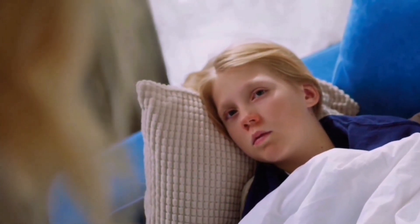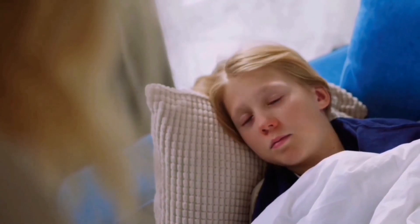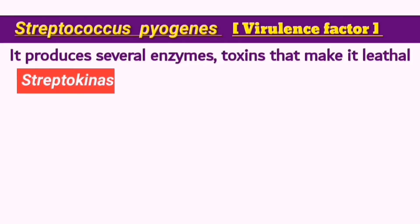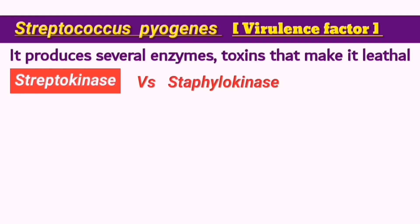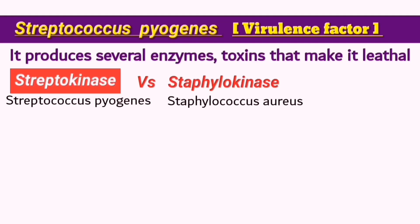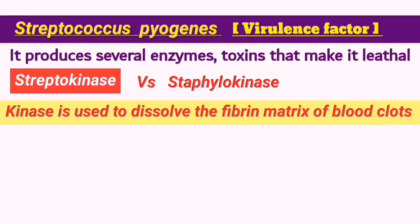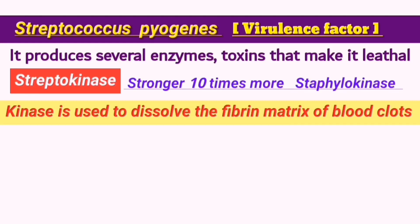S. pyogenes has many different virulence factors that include the production of enzymes, toxins and proteins which make it strongly virulent. Such as streptokinase, which is like the staphylokinase produced by Staph aureus mentioned in our previous video. The kinase enzymes prevent blood clotting to allow easy passage of the bacteria through cells, giving it a greater chance to infect more cells. Streptokinase has been found to be around 10 times stronger than staphylokinase.